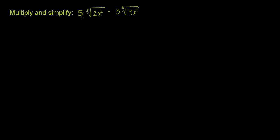Multiply and simplify 5 times the cube root of 2x squared, times 3 times the cube root of 4x to the fourth.